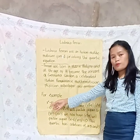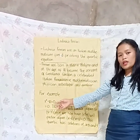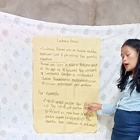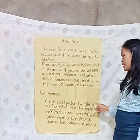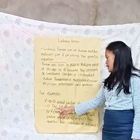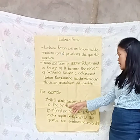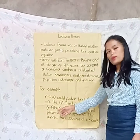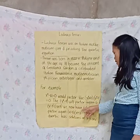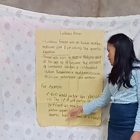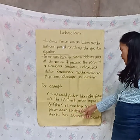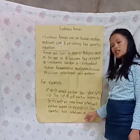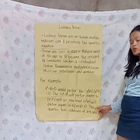This is an example of a quartic equation: x to the power of 4 minus 81 equals 0. This factors as (x² + 9)(x² − 9) = 0. The factor x² − 9 factors further as (x − 3)(x + 3). This quartic equation has solutions at x = −3 and x = 3.